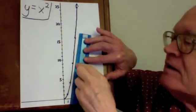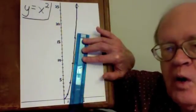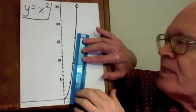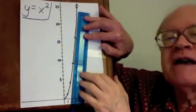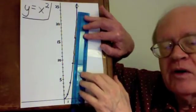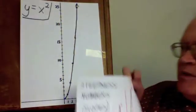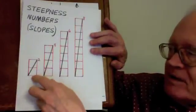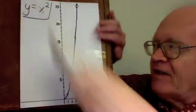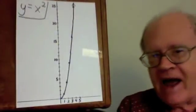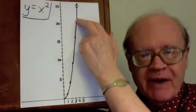Where x is 3, that's at this point — it's yet steeper, steep enough to go over 1, up 6. And where x is 4, which is that point, it's yet steeper — steep enough to go over 1, up 8. So I've just described the 4 steepness numbers I showed on this sheet: steepness numbers of 2, 4, 6, and 8. And the higher you go on this graph, the steeper it gets — the bigger its steepness number.